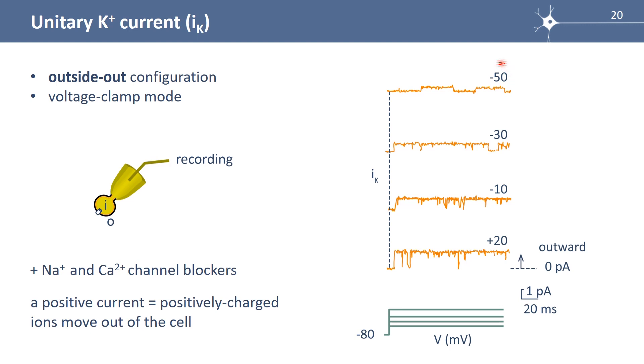What do we record? When the membrane is at minus 50 millivolt, we record an outward current. You see here, it's a positive current, it's an outward current. An outward current is a movement out of the cell of positively charged ions. And the amplitude of this current is quite small, 0.5 picoamps.